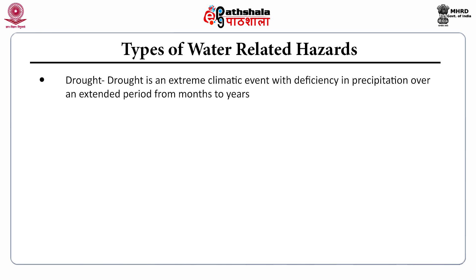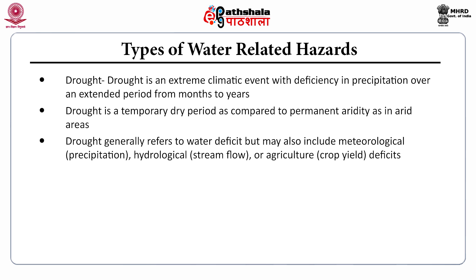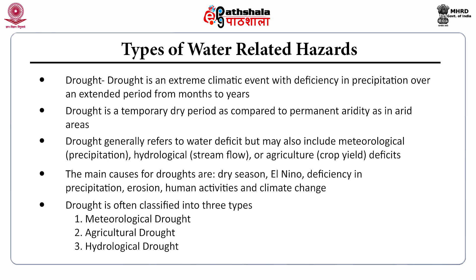Now we will discuss about drought. Drought is an extreme climatic event with deficiency in precipitation over an extended period from months to years. Drought is a temporary dry period as compared to permanent aridity as in arid areas. Drought generally refers to water deficit but may also include meteorological, hydrological and agricultural deficits. The main causes for drought are dry season, El Niño, deficiency in precipitation, erosion, human activities and climate change. Drought is often classified into three types: meteorological drought, agricultural drought and hydrological drought.